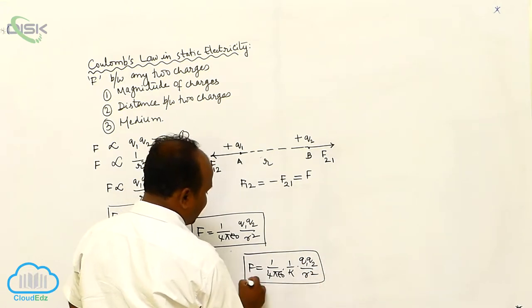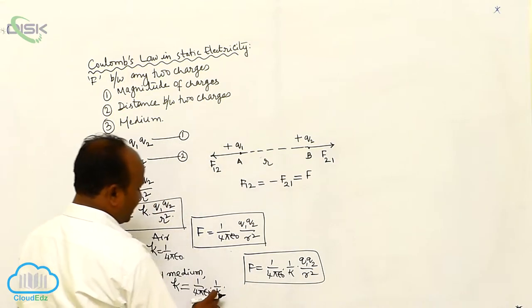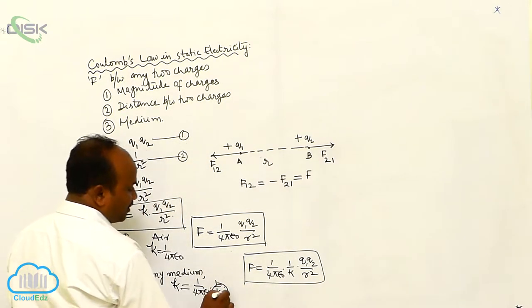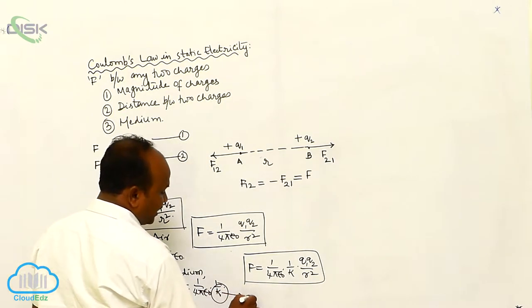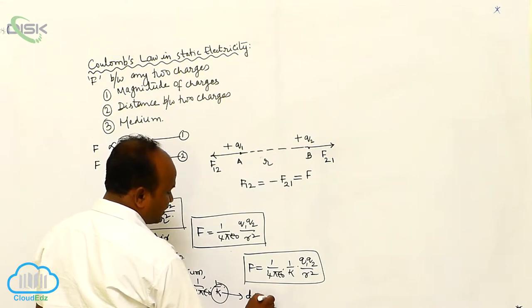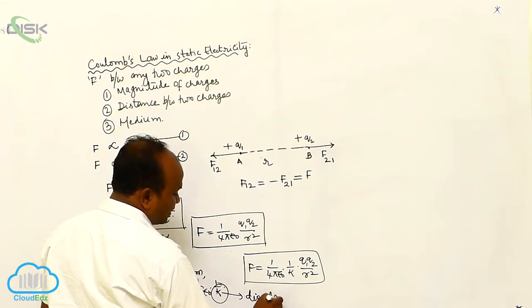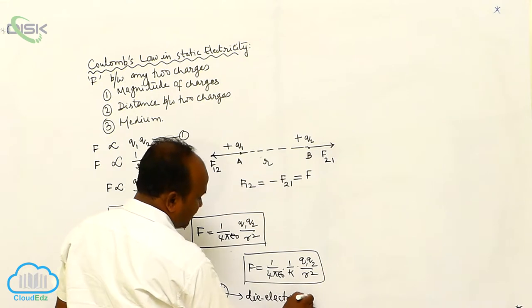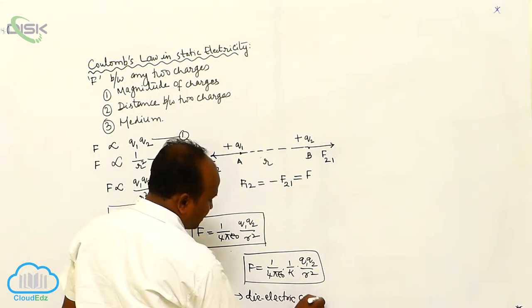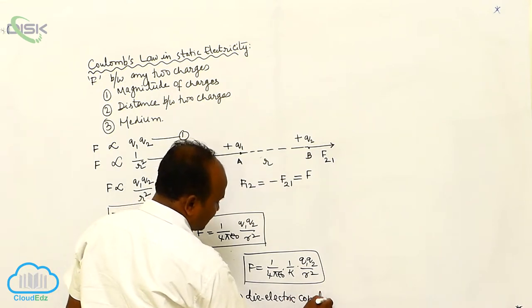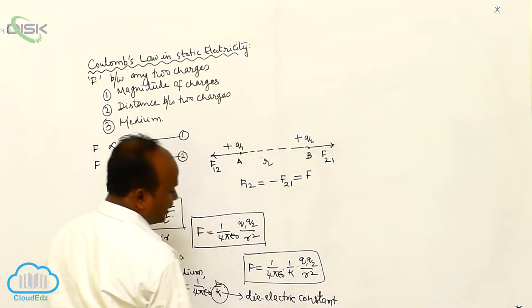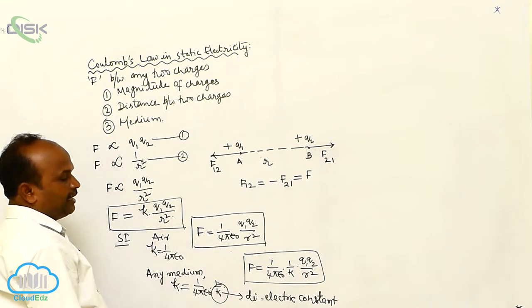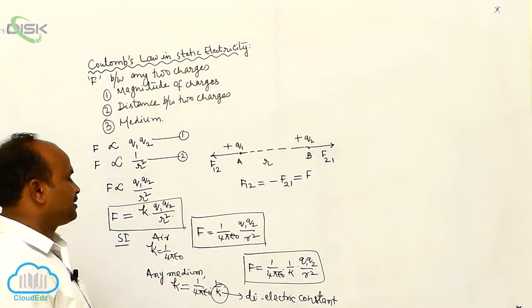Here, we are introducing another k. This k is called the dielectric constant.